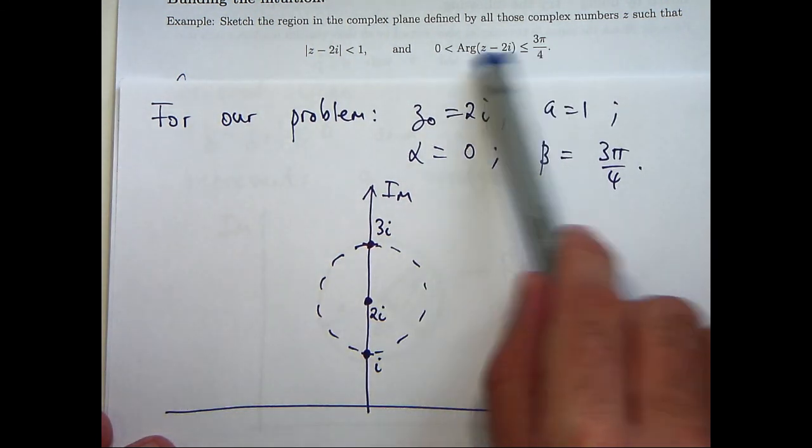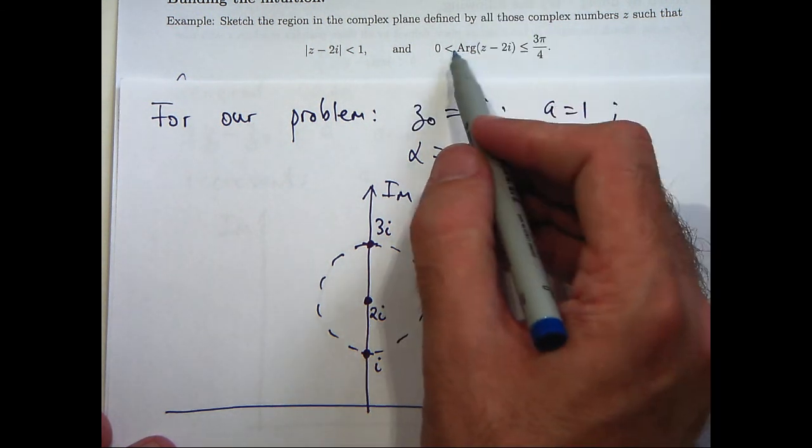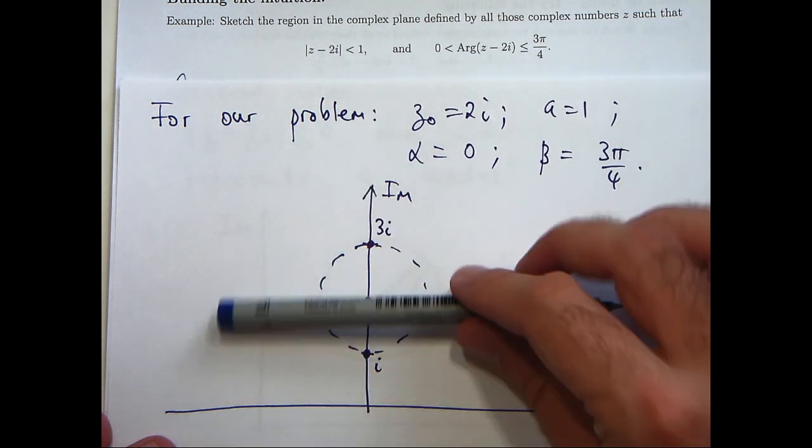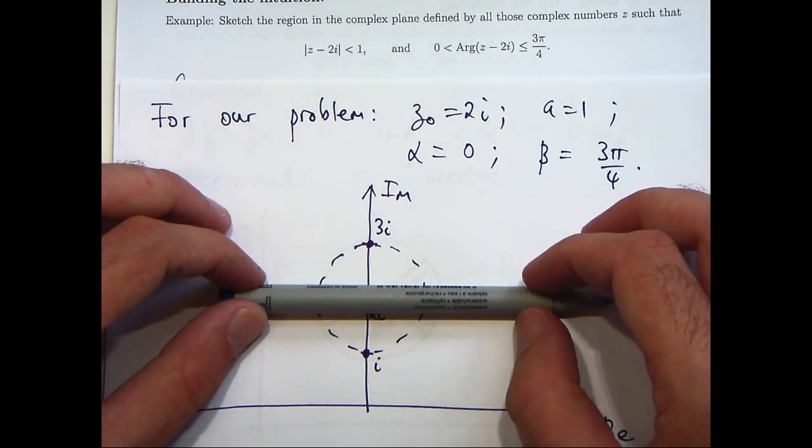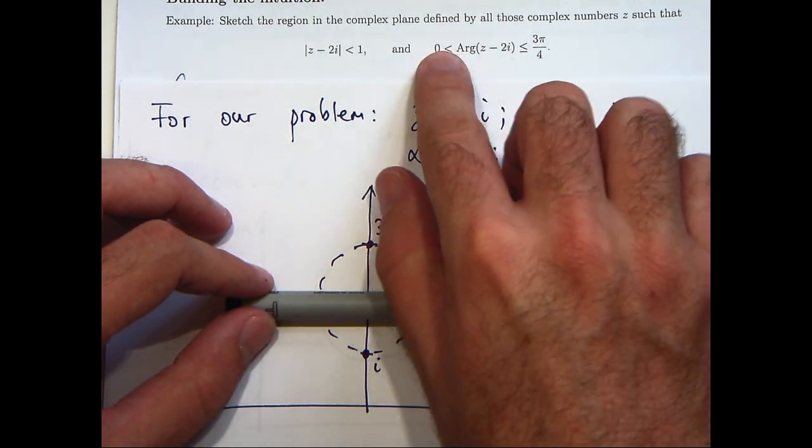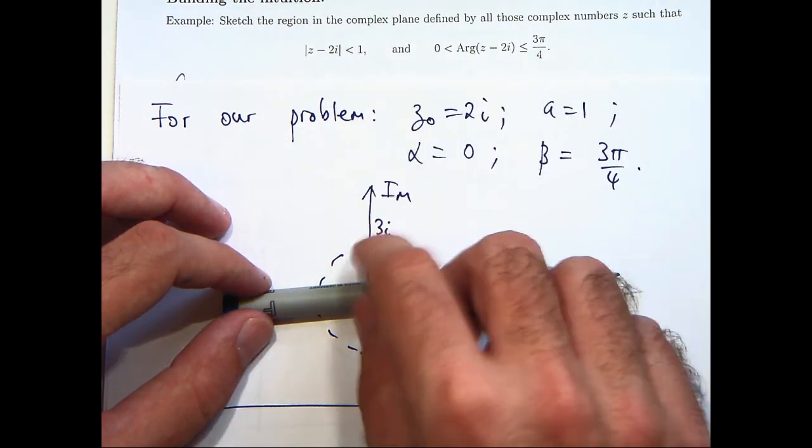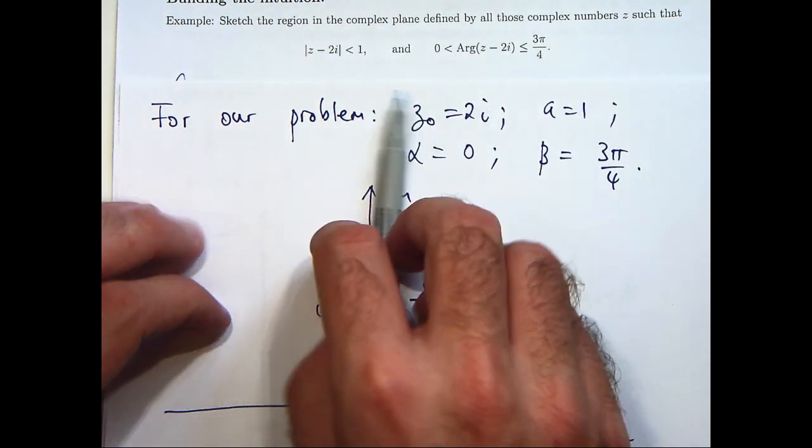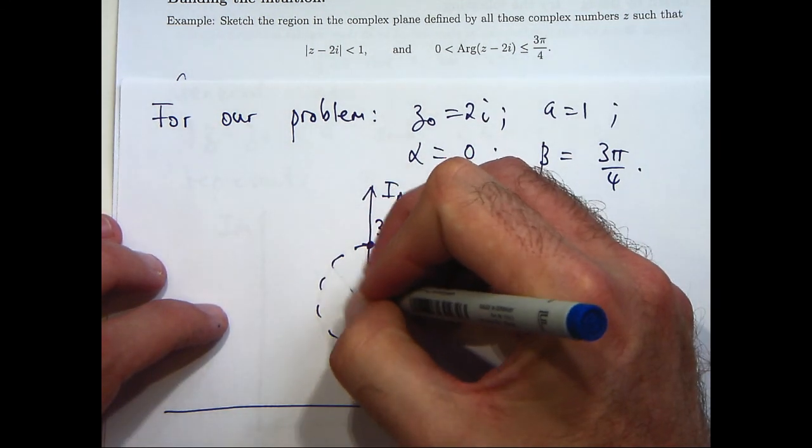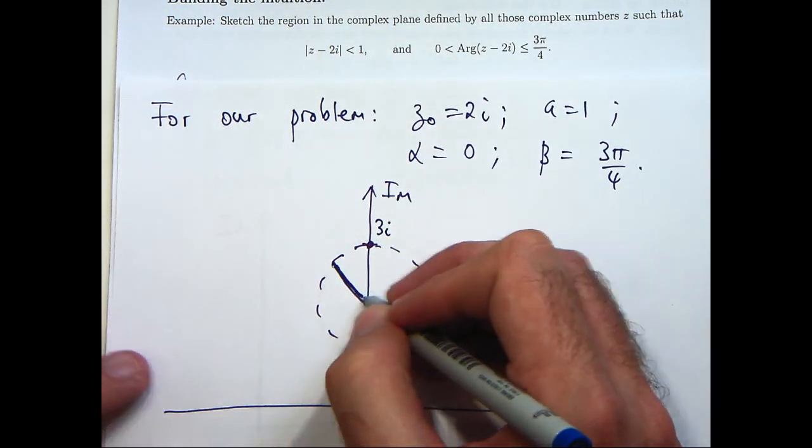So let's look at our angles now. In this case alpha is 0, so I can just go straight out here because remember I draw, or I consider a horizontal line and I want to rotate. So the first condition says that I don't do any rotation. The second condition says I rotate around 3pi on 4 radians and because I have less than or equals to, I don't need to draw a dotted line here.